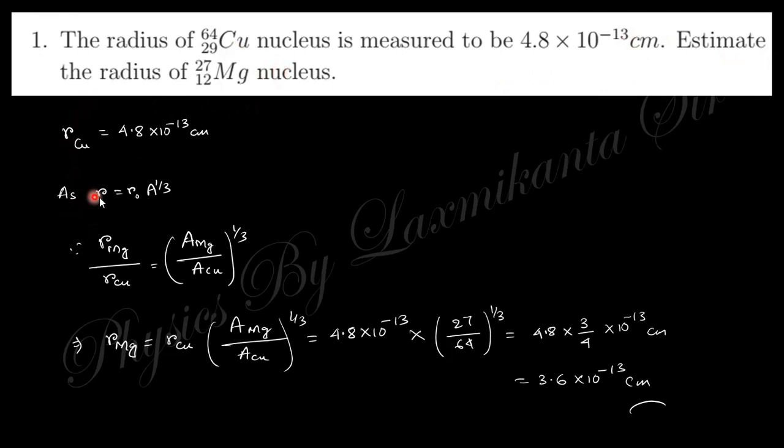You know very well that the radius of nucleus is related with r = r₀A^(1/3), where A is the mass number. For copper this is 64, for magnesium this is 27.